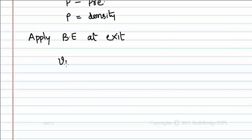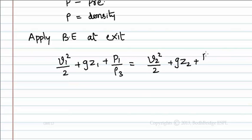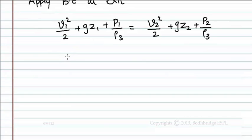That is v1 squared by 2 plus gz1 plus p1 by rho3 equals v2 squared by 2 plus gz2 plus p2 by rho3. But the liquid is stable and the elevation of the point from the reference plane, that is z1 and z2, are the same in this case. So z1 equals z2.